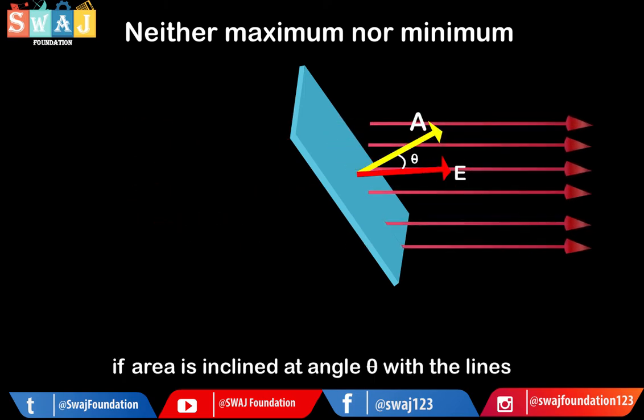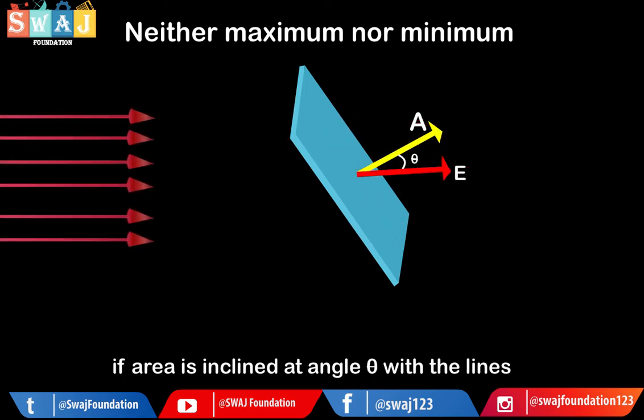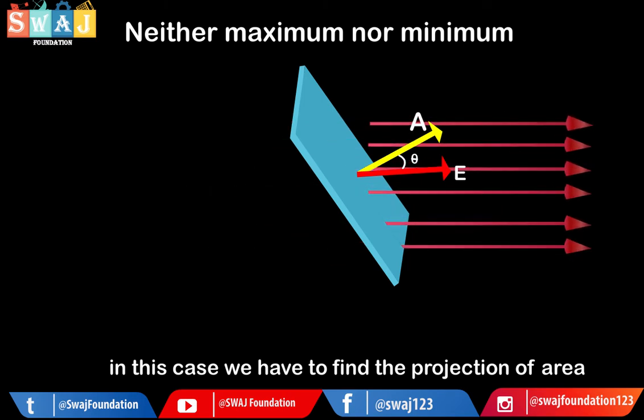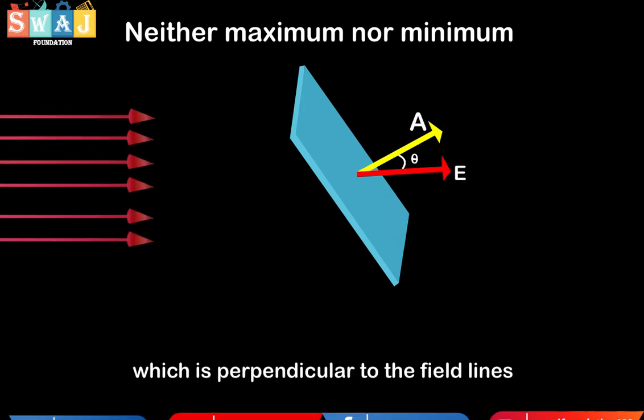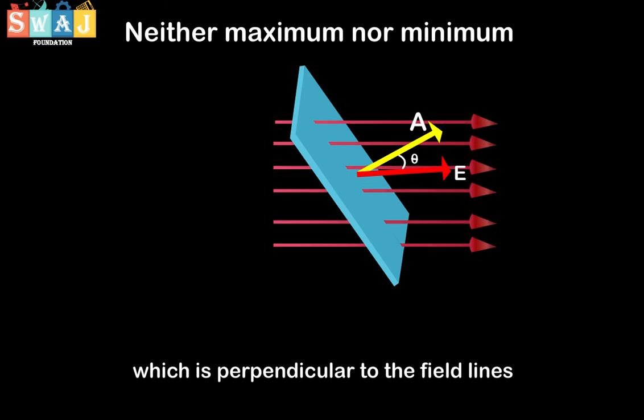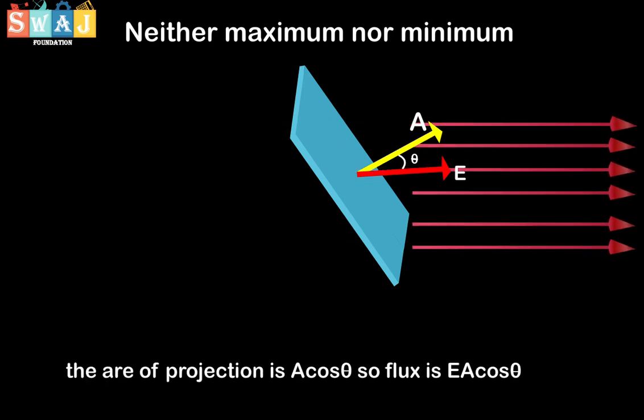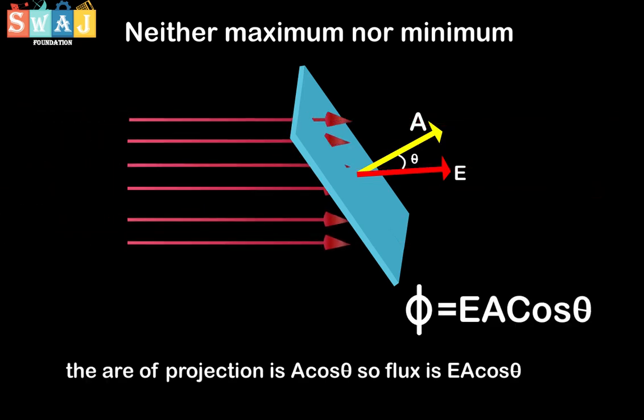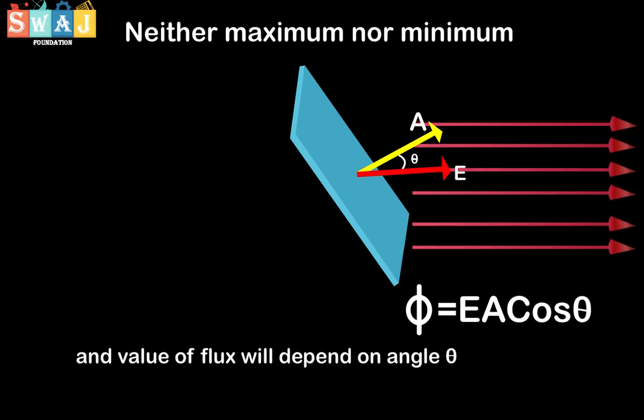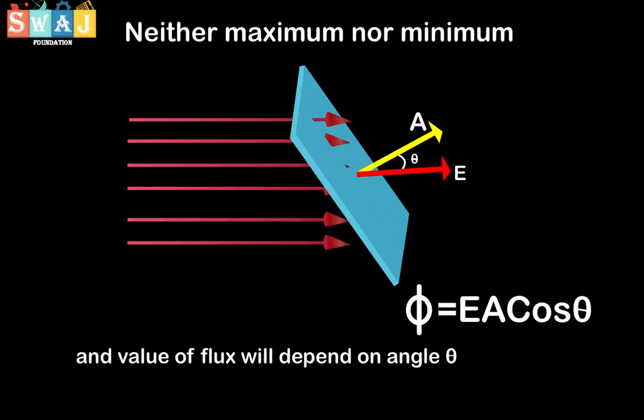Neither maximum nor minimum. If area is inclined at angle theta with the field lines, in this case we have to find the projection of area which is perpendicular to the field lines. The area of projection is A cos theta, so flux is EA cos theta, and value of flux will depend on angle theta.